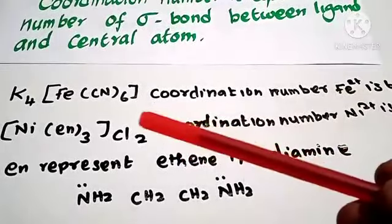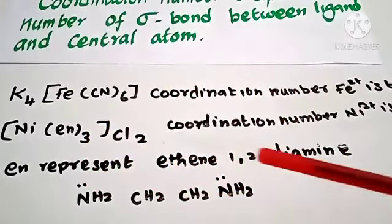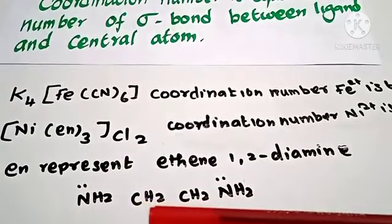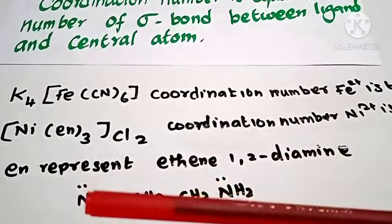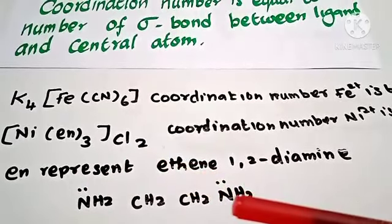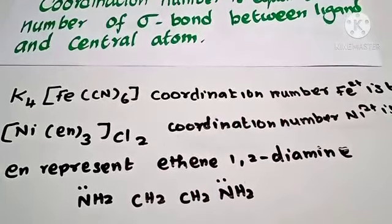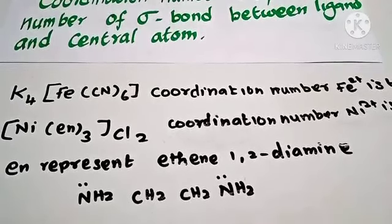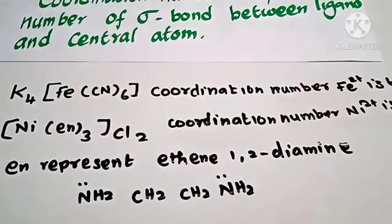In a complex compound, each ligand forms coordination bonds with the central metal ion. For example, in a nickel complex with ethylenediamine ligands, nitrogen is the donor atom. Each ligand forms two coordination bonds with nickel. Therefore, the coordination number of Ni2+ ion is 6.